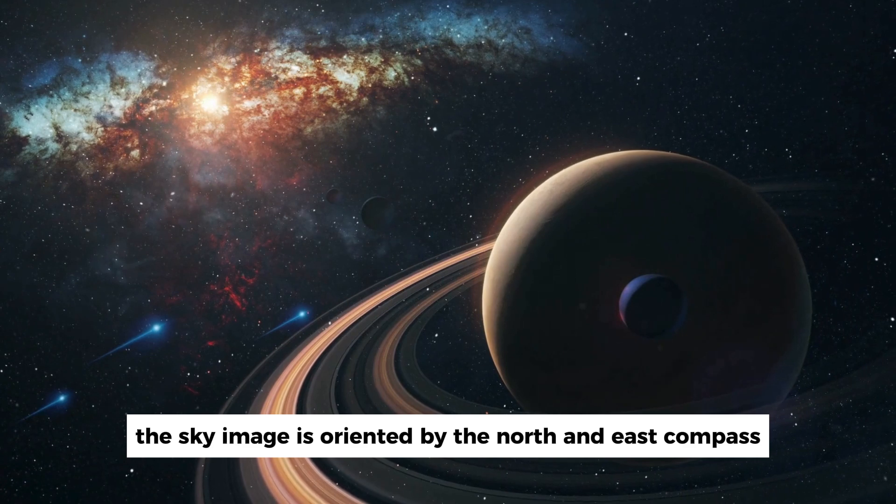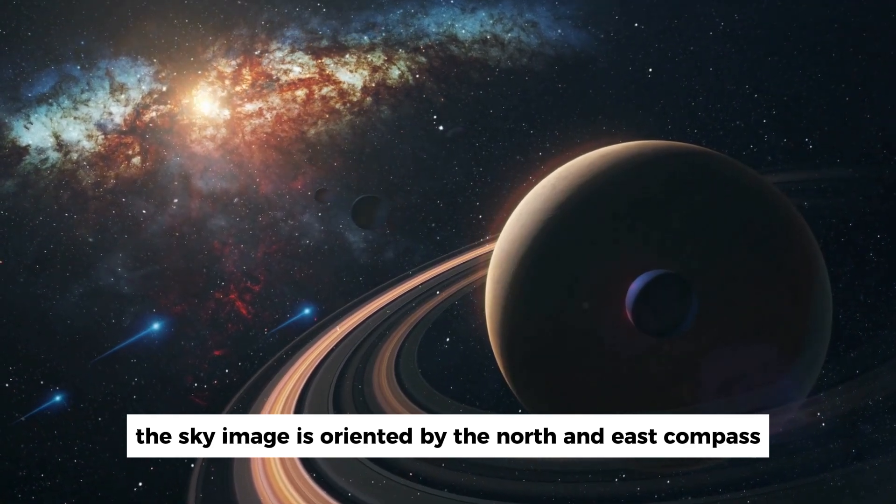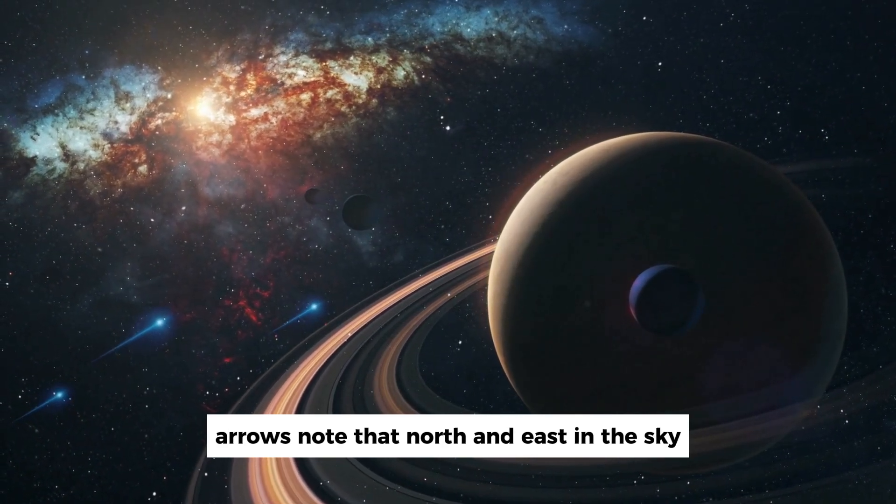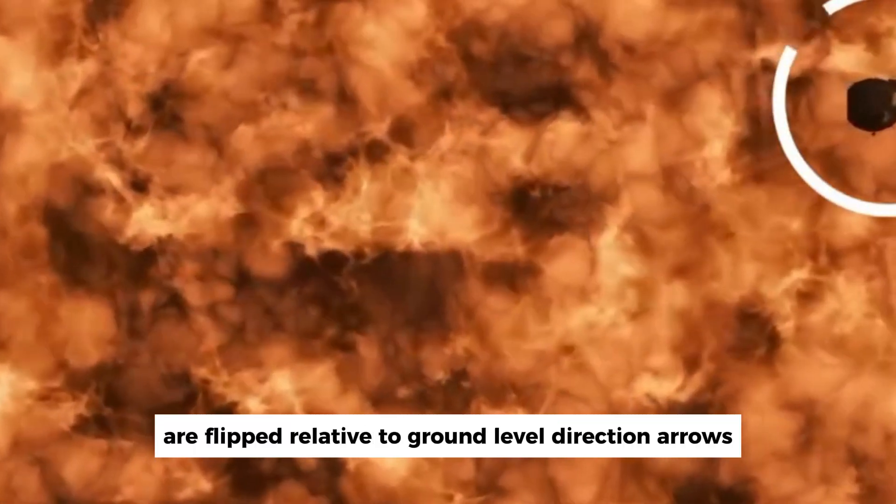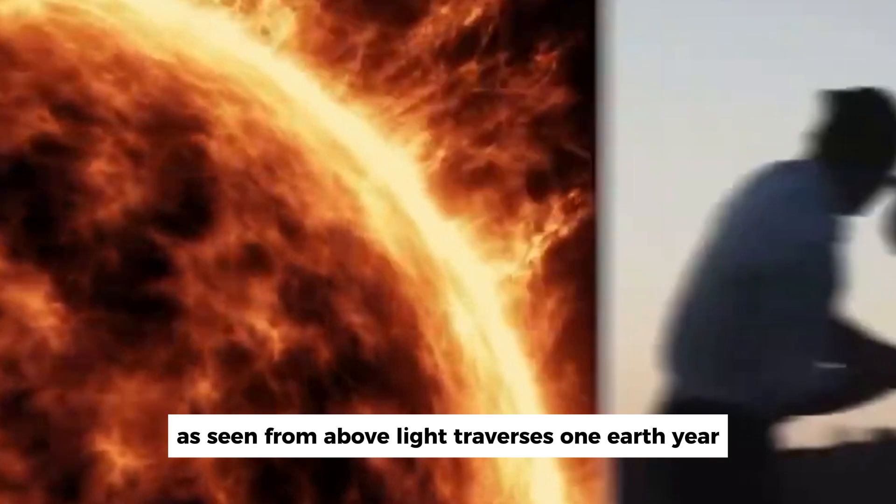Note that north and east in the sky, as seen from below, are flipped relative to ground-level direction arrows as seen from above.